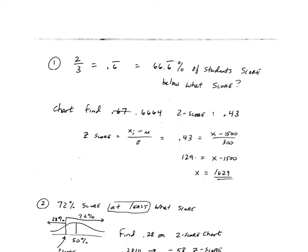So I looked on my z-score chart and I needed to figure out the z-score for 66.6 repeating percent. I came close at 0.6664 and the z-score is 0.43. So then you work backwards and if you know the z-score is 0.43, you could find the individual SAT score that has that z-score.